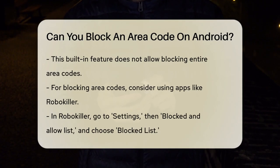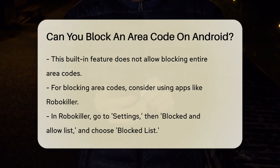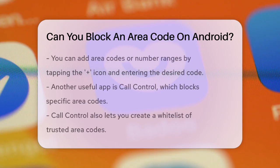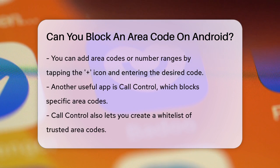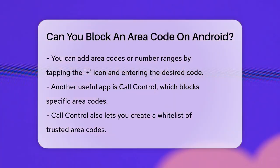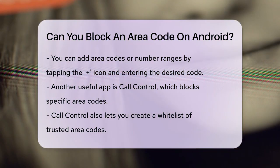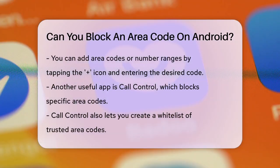For blocking specific area codes, you might need to use an app like RoboKiller. Open the RoboKiller app, go to Settings, then select Blocked and Allow List, and choose Blocked List. Tap the plus icon in the bottom right corner, select a number to add an area code or number range, enter the area code or range you want to block, select Block, and you can also add a label for easy identification.